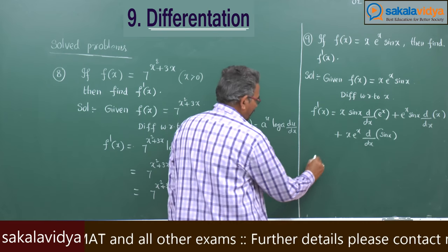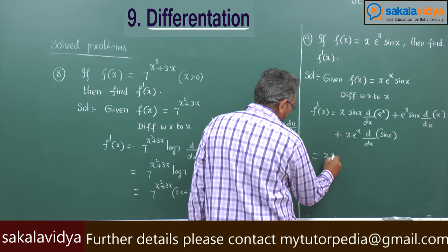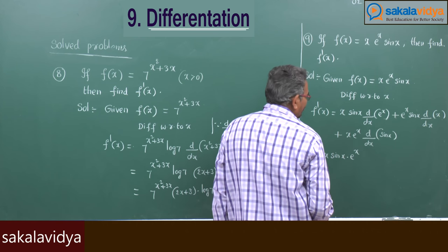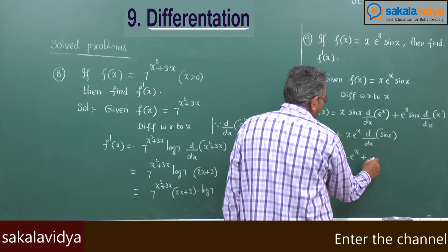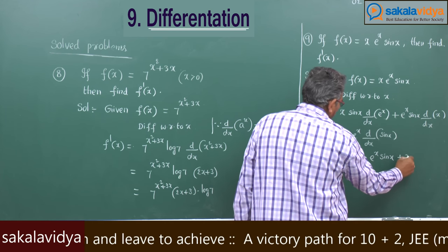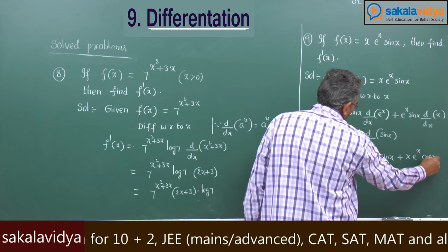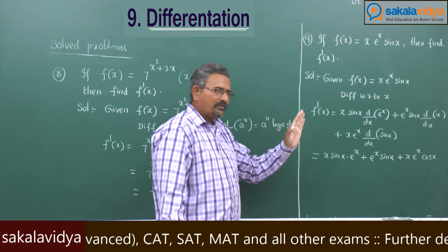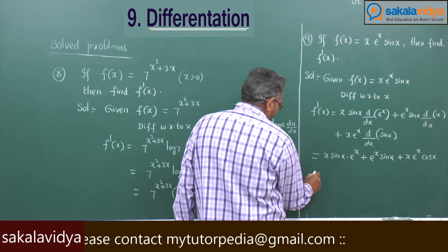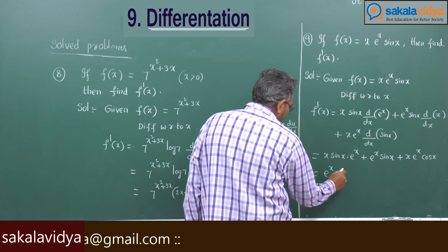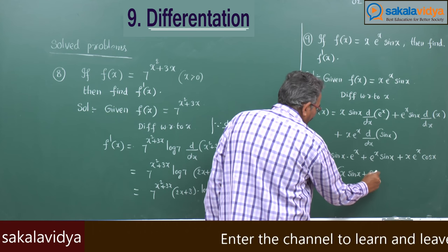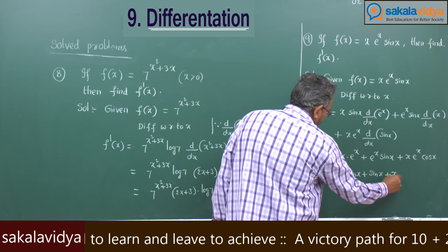So: eˣ·sinx times 1, plus eˣ·sinx times 1, plus x·eˣ times cosx. Taking eˣ common from all three terms, we get eˣ times (x·sinx + sinx + x·cosx).